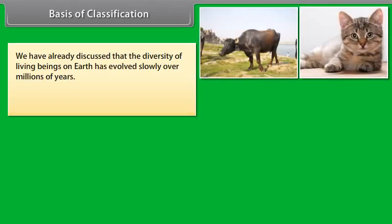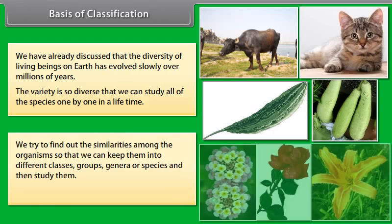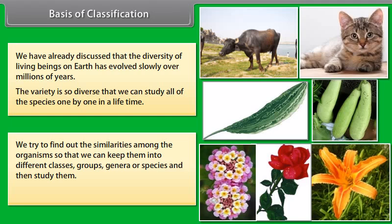Basis of Classification. We have already discussed that the diversity of living beings on earth has evolved slowly over millions of years. The variety is so diverse that we cannot study all of the species one by one in a lifetime. So we try to find out the similarities among the organisms so that we can keep them into different classes, groups, genera or species and then study them. This grouping is known as classification.